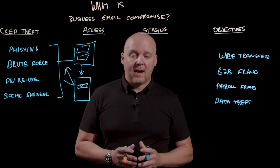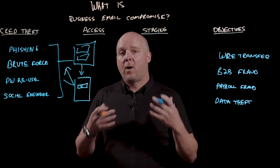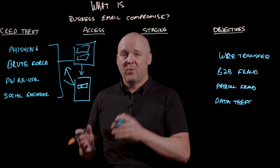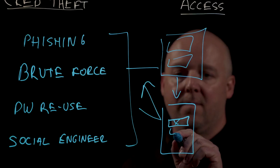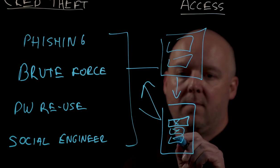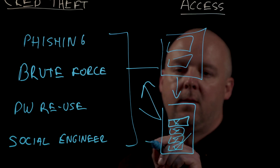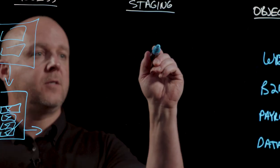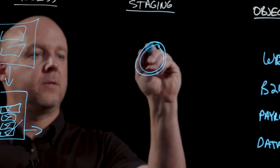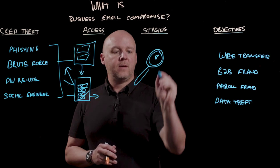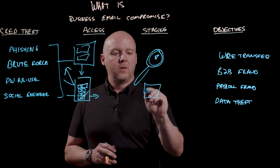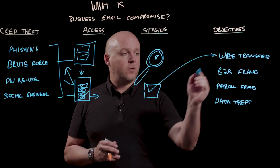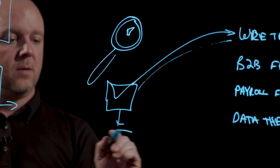A common technique attackers are using, though, is to simply bombard the user with multiple requests over and over again until they finally approve it to get it to stop. Once they're in, attackers will typically start to do reconnaissance to understand how the business operates. They'll then create evasive inbox rules so that when they start sending fraudulent emails, any replies back to those emails will go straight into the bin.